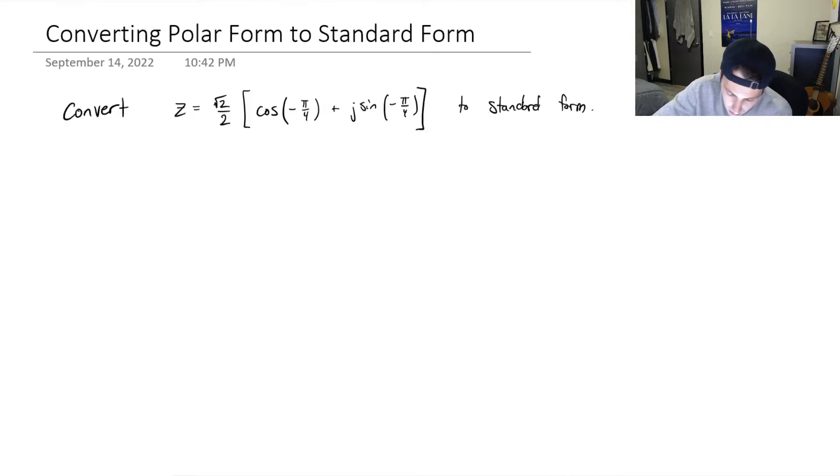So cosine of negative π over 4, let's put this. If we look at an Argand diagram, we've got our real axes, we've got our imaginary axes, and we know that that angle is going to be right down over here. It's got a length of √2 over 2, and this angle right here, negative π over 4.